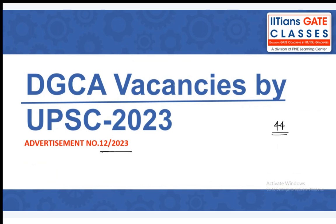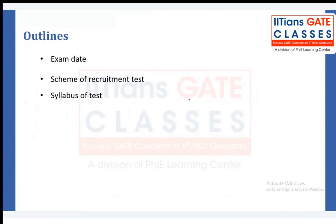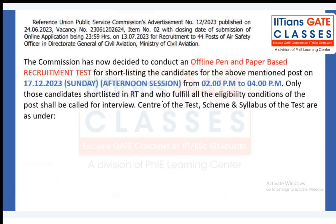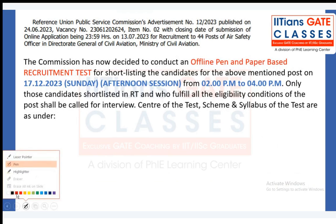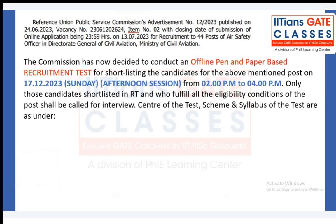The total number of vacancies is 44, released under item number 2 for advertisement number 1223. You can go through the complete advertisement PDF — in the notification PDF you will find item number 2 for Air Safety Officer in the Directorate General of Civil Aviation, released by UPSC.